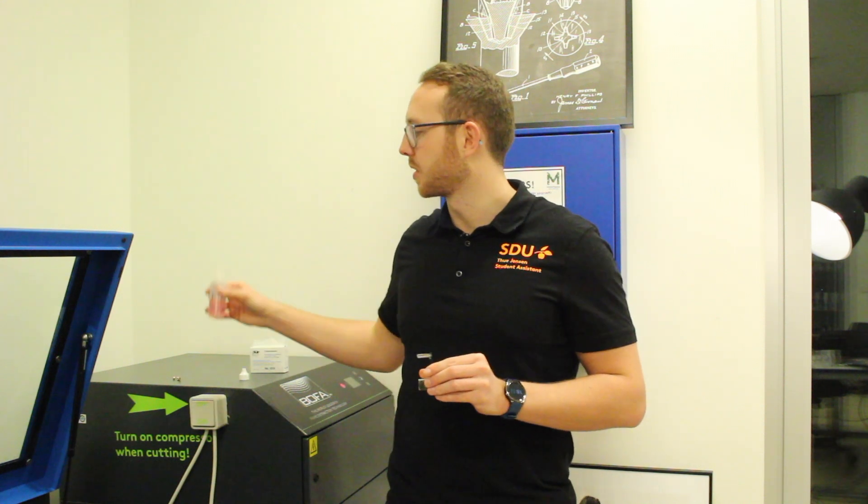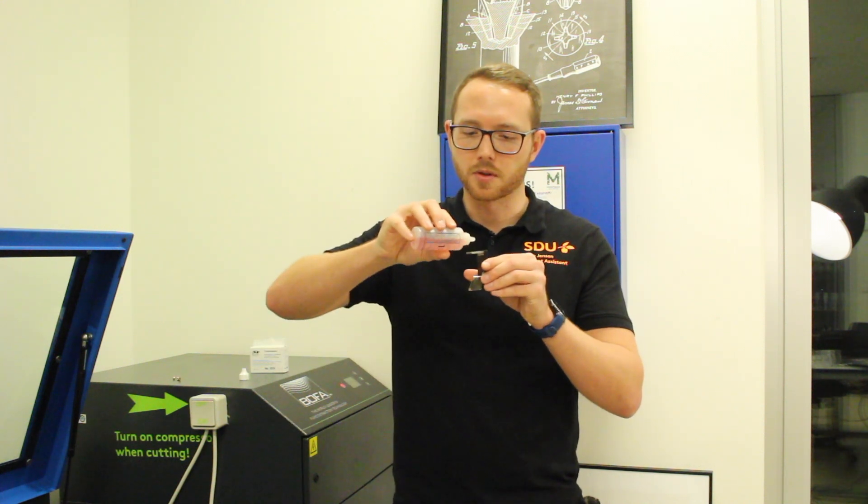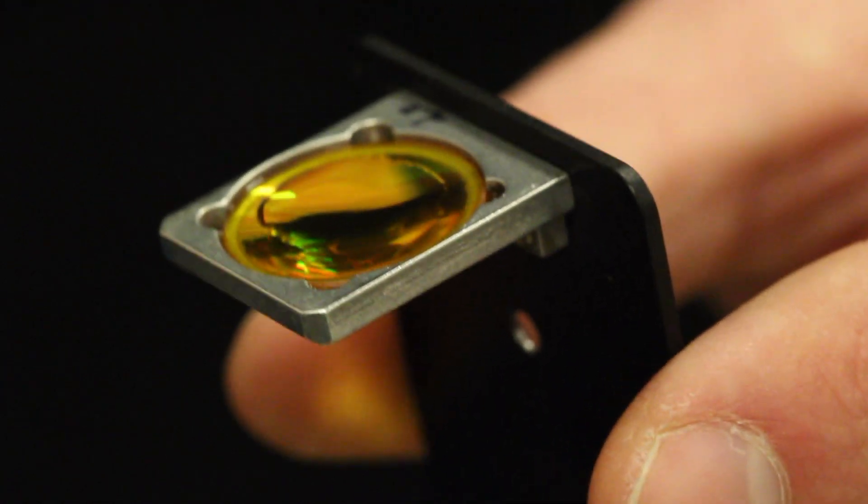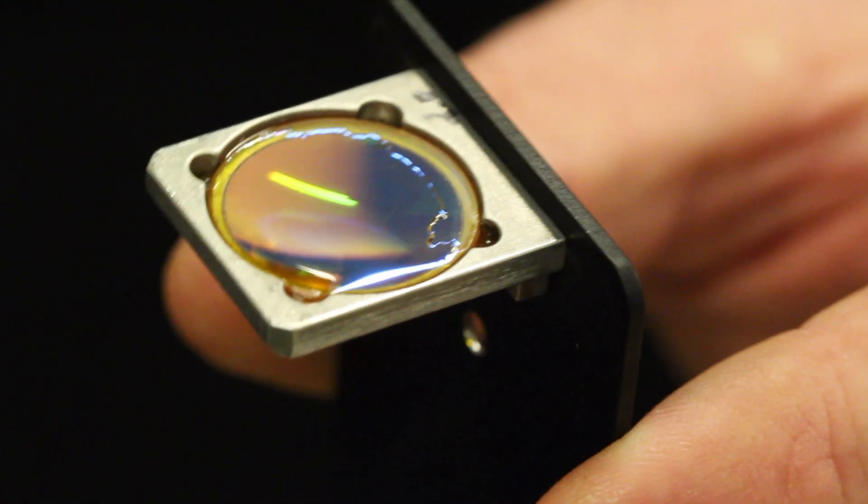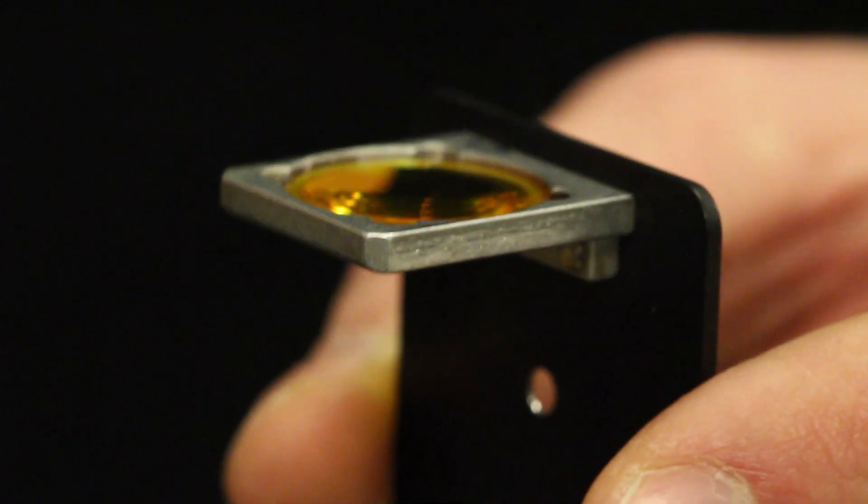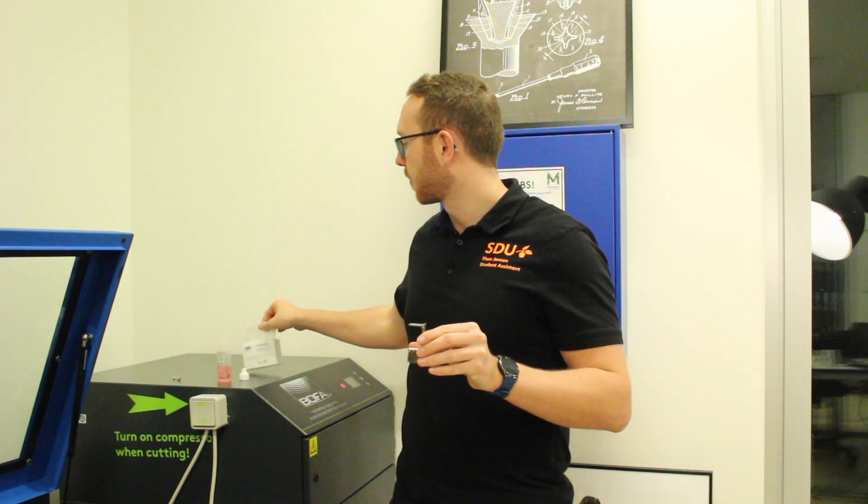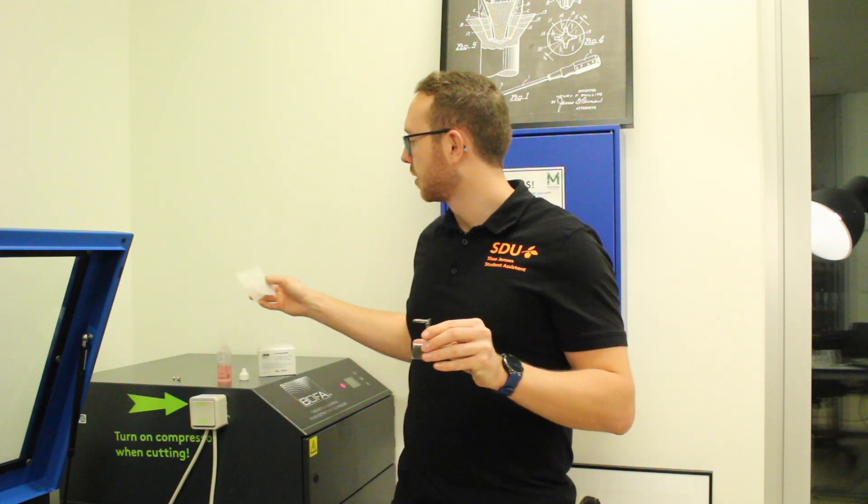If you find any dirt on the lens or the mirror, you'll use one drop of this lens solution on the surface like this. And then you'll move it all around the surface like this. And you'll finish off wiping it off using this lens paper.